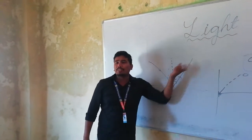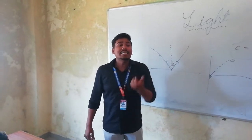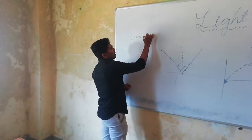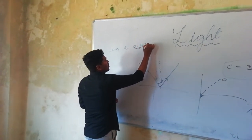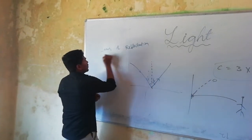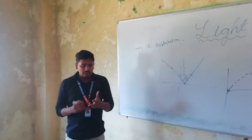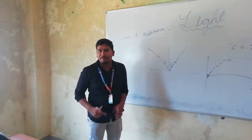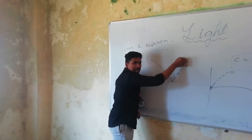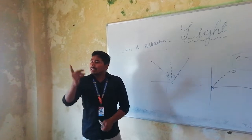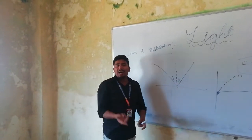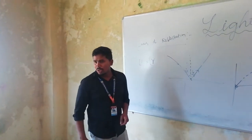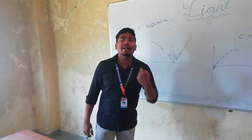The bounce back of light is called reflection. We have two laws of reflection. First law: the incident ray, normal ray, and refracted ray lie on the same plane. Second law: the angle of incidence is equal to the angle of reflection.